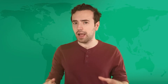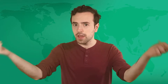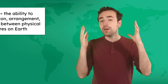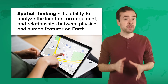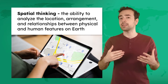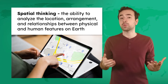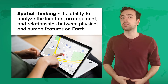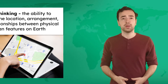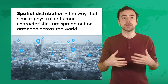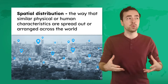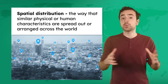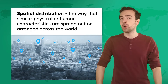The most important tool a geographer has is their brain. One of the most powerful tools in geography is spatial thinking — the ability to analyze the location, arrangement, and relationships between physical and human features on Earth. To do this, geographers observe spatial distribution, which refers to the way that similar physical or human characteristics are spread out or arranged across the world.